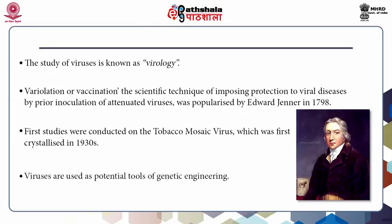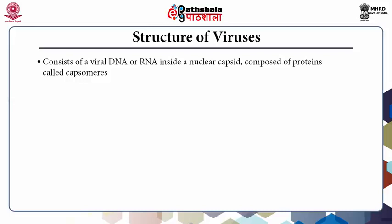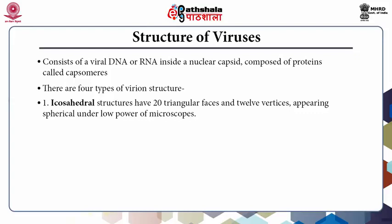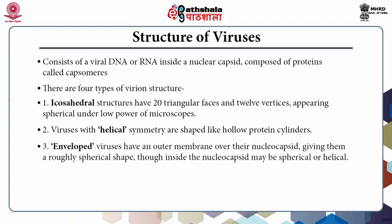Viruses are also used as potential tools of genetic engineering. In their structure, they consist of viral DNA or RNA inside a nucleocapsid, which is composed of proteins called capsomeres. There are four types of virion structure. First, icosahedral structures, which have 20 triangular faces and 12 vertices, appearing spherical under low power microscope. Second, viruses with helical symmetry, shaped like hollow protein cylinders.